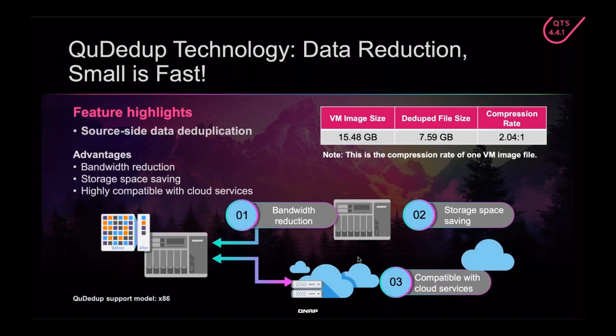Our deduplication technology is block-level data deduplication. It's not just that duplicate files are deduplicated — it's actually that if there are duplicate groups of blocks within a file, those blocks can be deduplicated. That means even a single file can get smaller. It also means that if you have many similar files, most of the blocks within the different files can be deduplicated. So block-level deduplication deduplicates much more effectively than file-level deduplication.